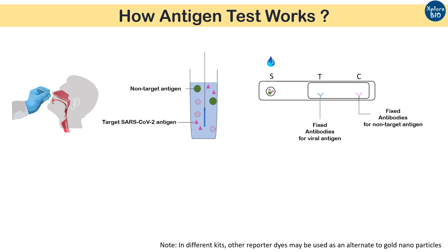The S-point is where the sample is loaded. Next is a conjugation pad where antibodies against the novel coronavirus antigen are present. As a positive control for the test, antibodies for non-target antigens normally present in the pharynx region are also present here. These antibodies are conjugated with gold nanoparticles, which help in visualization, and they are free to move through capillary action.